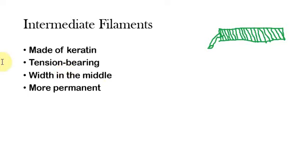It's tension-bearing just like microfilaments. It's got a width in the middle of the other two, so they're wider than microfilaments but thinner than microtubules. They've got a distinct purpose in that they're more permanent than microfilaments. Because of this, as the cell grows, it'll start with microfilaments and then start replacing them with intermediate filaments made out of keratin, and actually it could be certain other fibers.